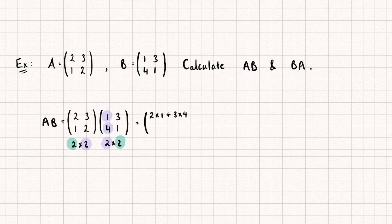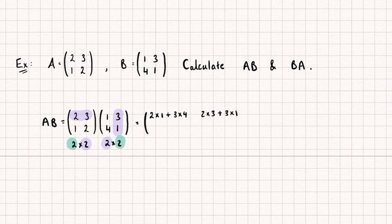Let's now calculate the next element — the one in the first row, second column. We do this by multiplying the first row of our first matrix by the second column of the second matrix in the exact same way. So we're going to do 2 multiplied by 3, plus 3 multiplied by 1. Then for the bottom left element — second row, first column — we take the second row of the first matrix multiplied by the first column of the second matrix.